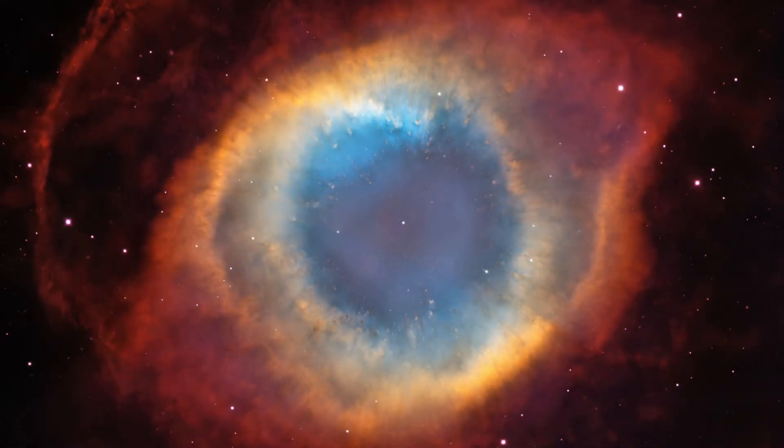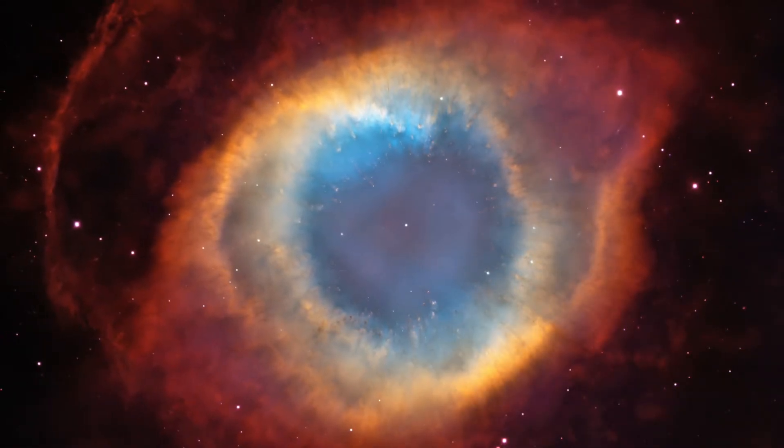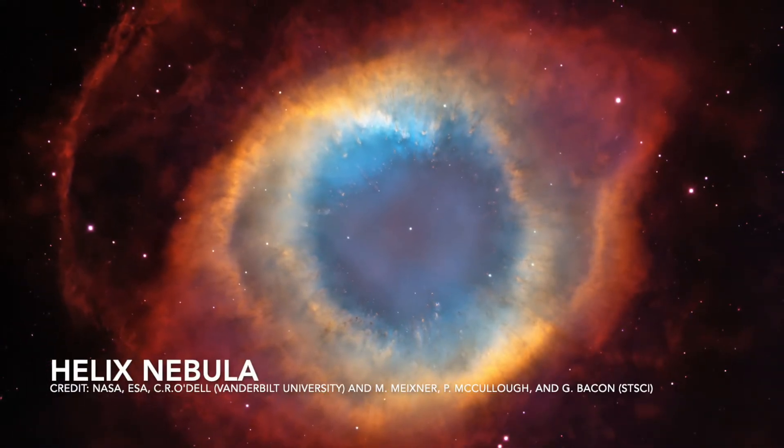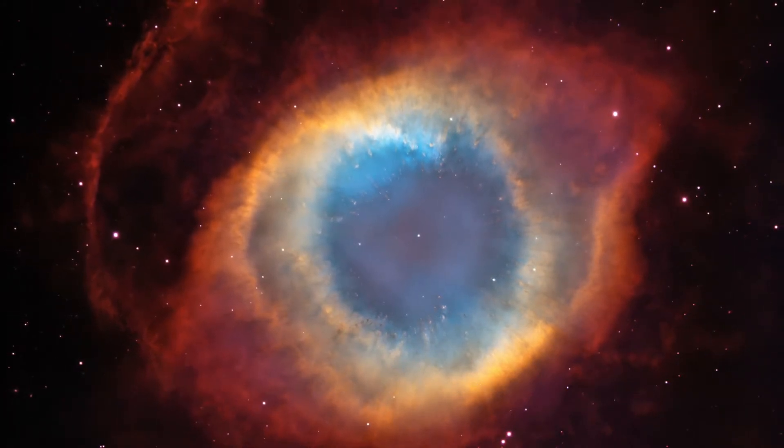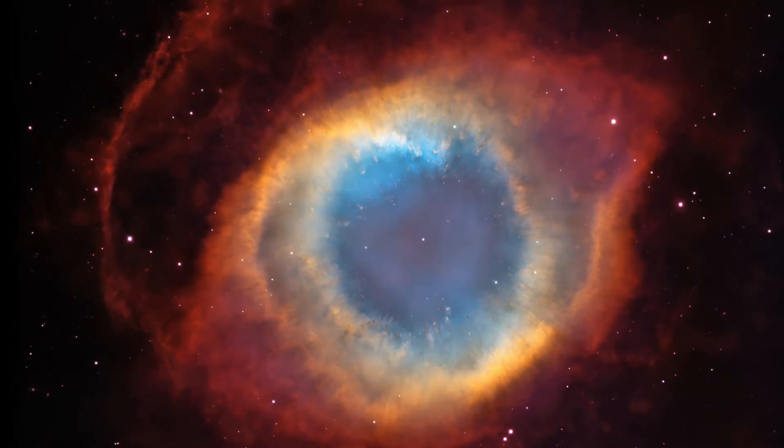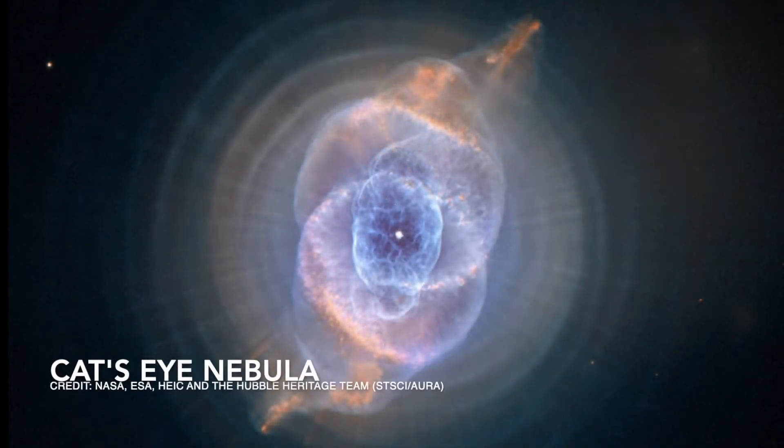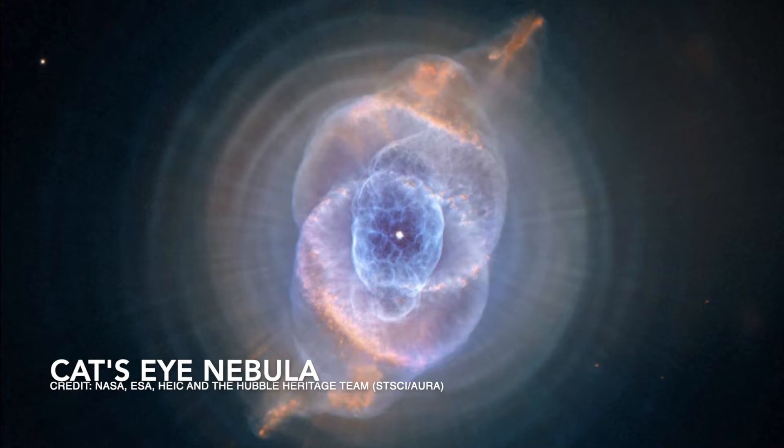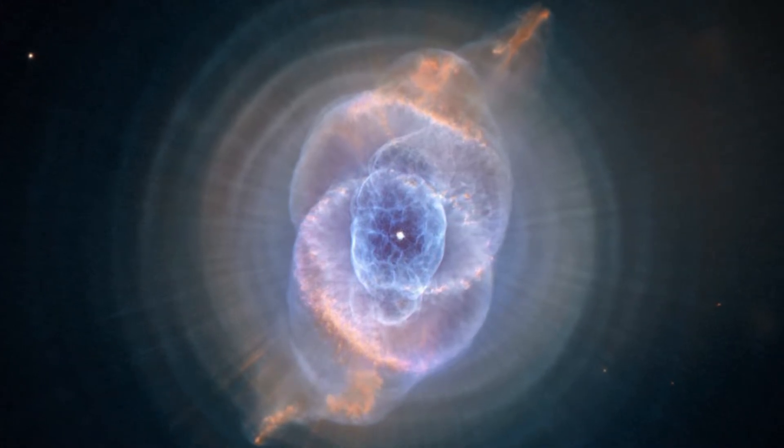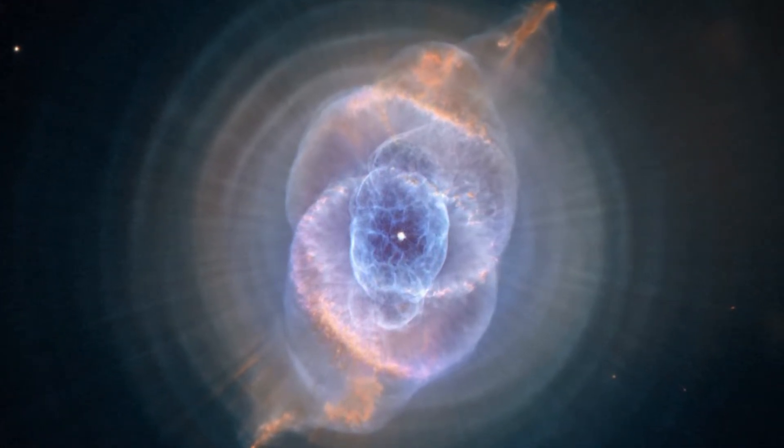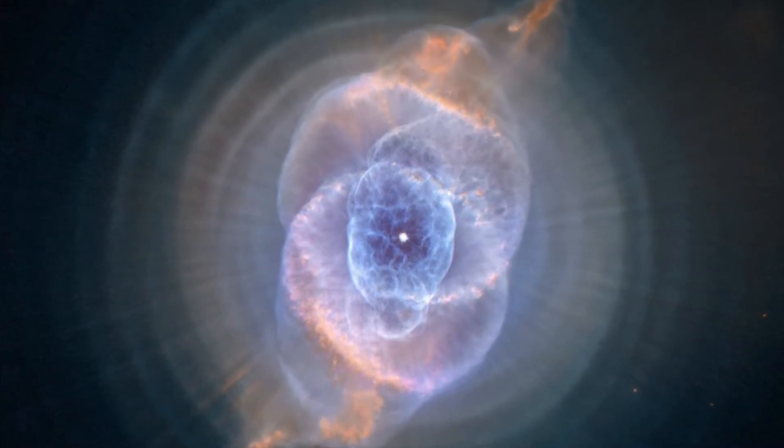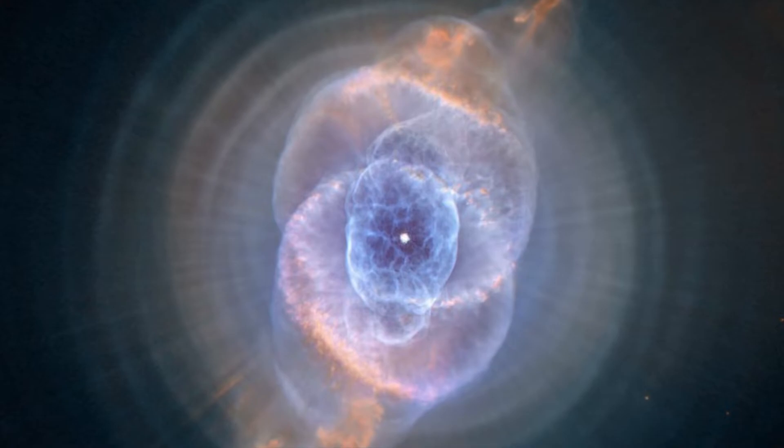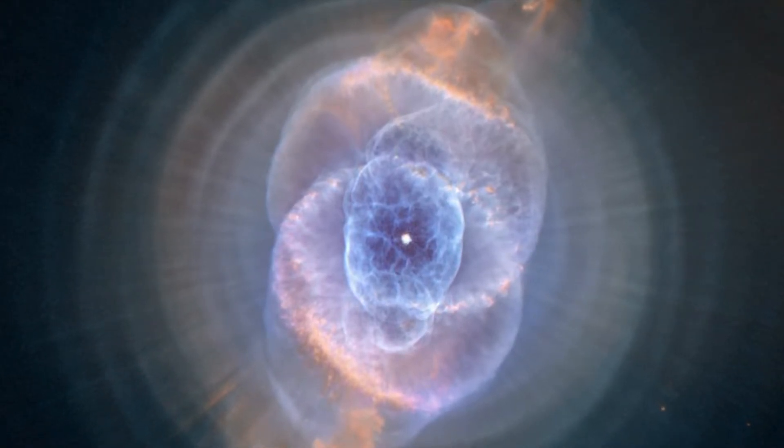Other examples of more static planetary nebulae include the Helix Nebula, which is located around 650 light-years away and happens to be about three light-years across. Or the Cat's Eye Nebula, located just over 3,000 light-years away, whose concentric rings of expanding gases can be seen pulsating around the central star. Astronomers have calculated each ring to have been ejected from the central star's outer layers in increments of about 1,500 years.